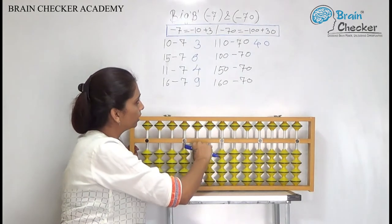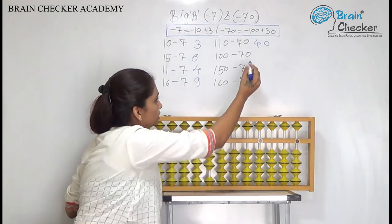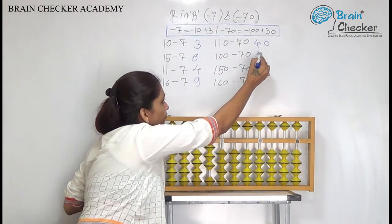Same way the next is 100 less 70. So add 30 less 100. So the answer is 30.